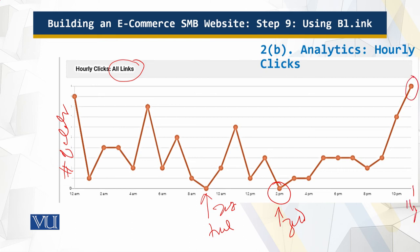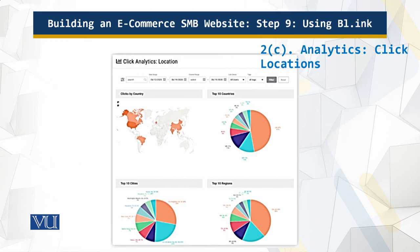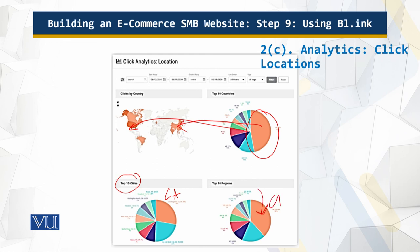This tells me the time at which my customers are looking at my website and clicking the links. Looking at the locations, the higher percentage corresponds to the United States. The top 10 cities show Los Angeles, and the top 10 regions show California state. I get all the statistics of where my customers are, when they are visiting, how they are clicking, and what time of day.